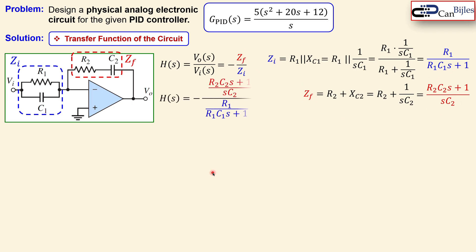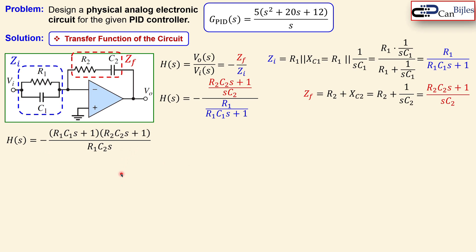We substitute the Zi and Zf expressions into the transfer function. To simplify the resulting fraction of fractions, we multiply the numerator and denominator first by s·C2, and then by (R1·C1·s + 1). This eliminates the nested fractions and yields a cleaner expression that makes it easier to recognize the poles and zeros.